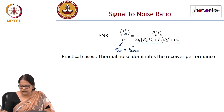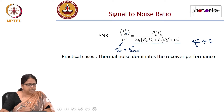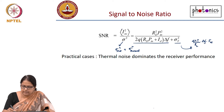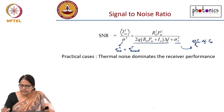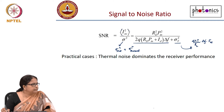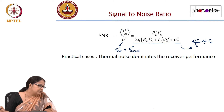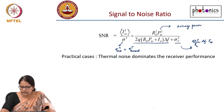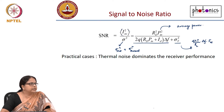Sigma_short squared is the shot noise term, and sigma_thermal squared is given by 4kT divided by R_L times delta_F times the noise figure of the amplifier. The square of the current is the square of R_d times P_in squared, where P_in represents the average power falling on the receiver. In practical cases, thermal noise dominates over shot noise.